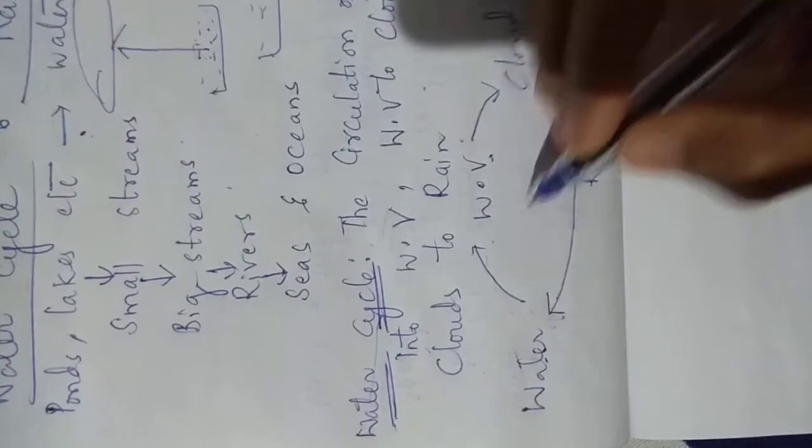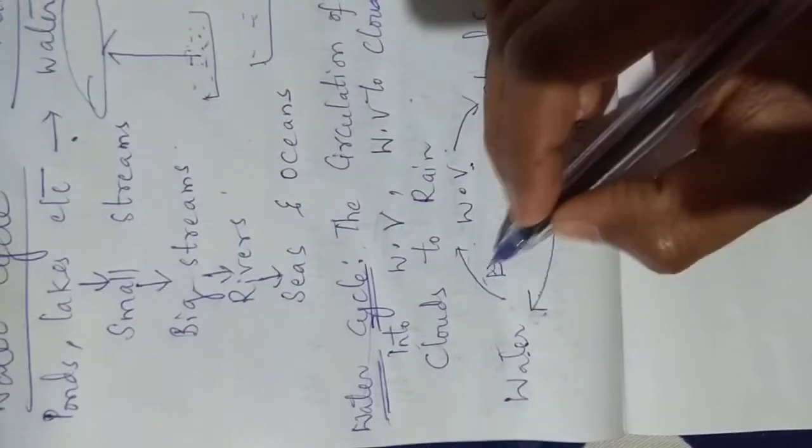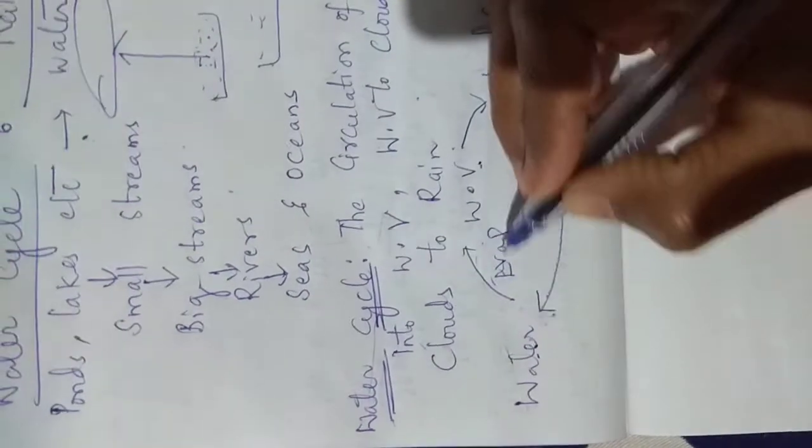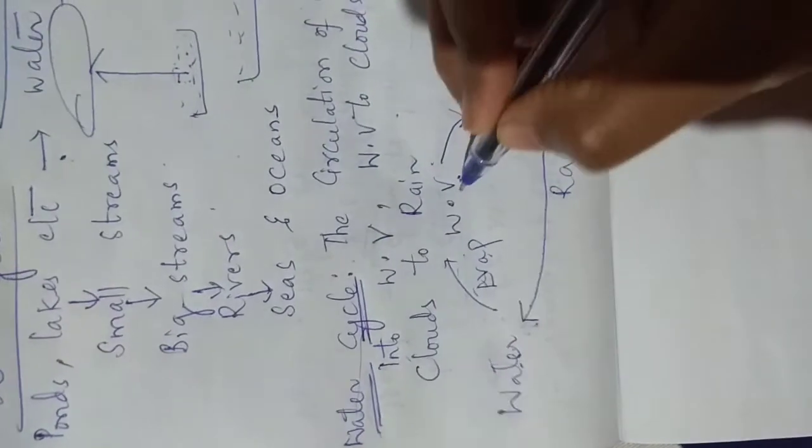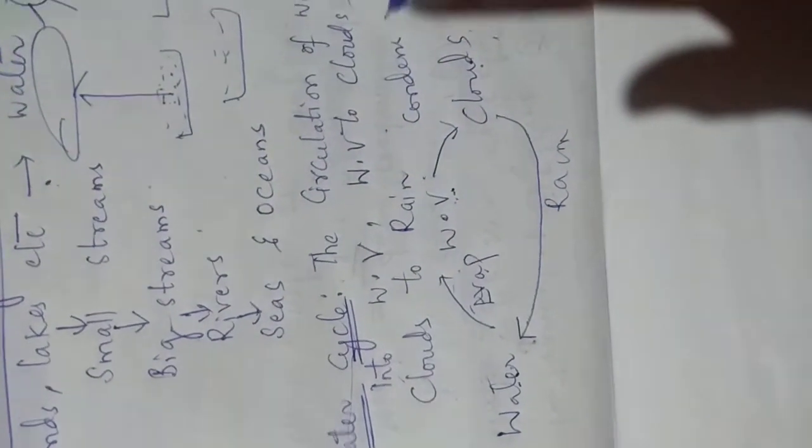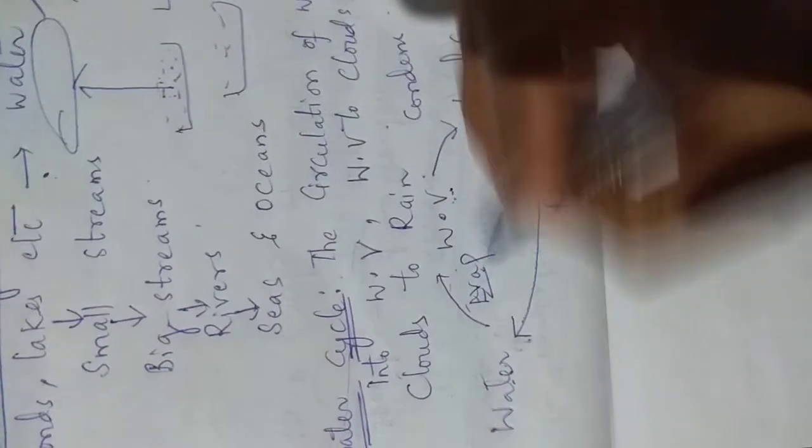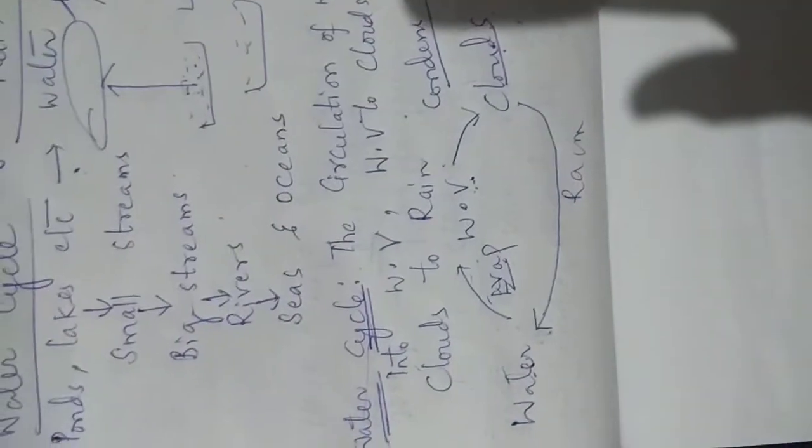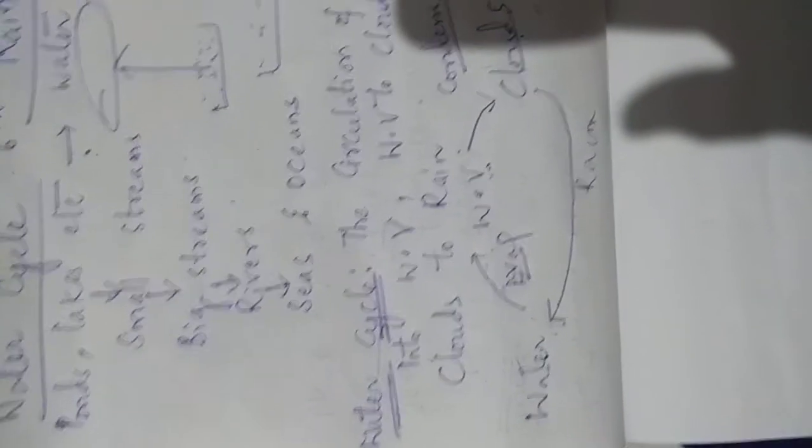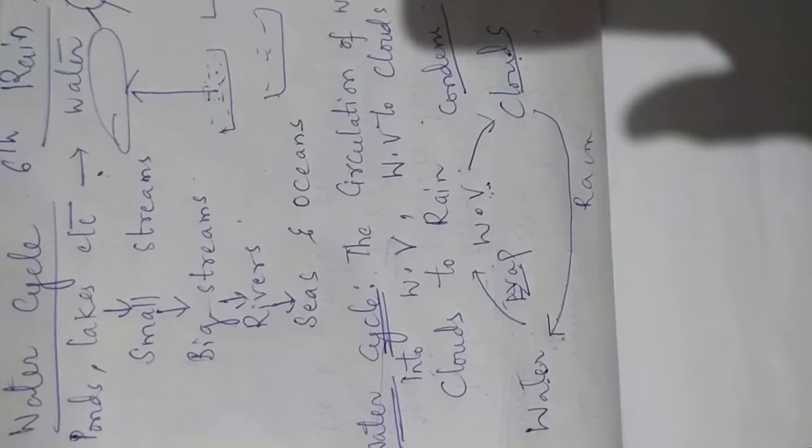And here two processes will be there: evaporation—water evaporates to form water vapour—and water vapour condenses to form clouds. Evaporation and condensation, both processes are included in water cycle.